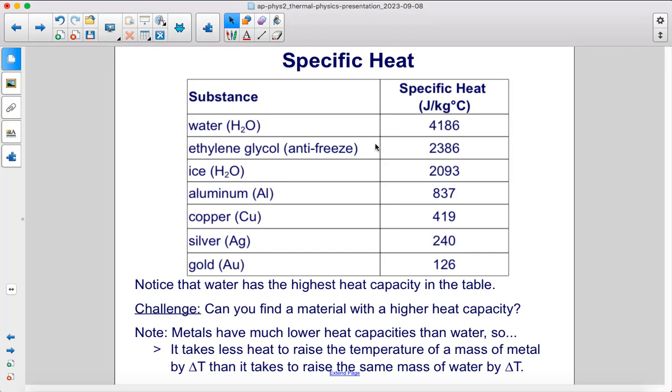Here is a table of different substances and their specific heats. Notice that water has the highest heat capacity in the table. Can you find a material with a higher heat capacity? Note, metals have much lower heat capacities than water. So it takes less heat to raise the temperature of a mass of metal than it takes to raise the same mass of water by that same temperature difference.